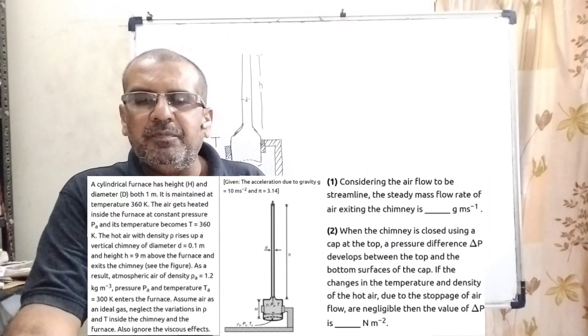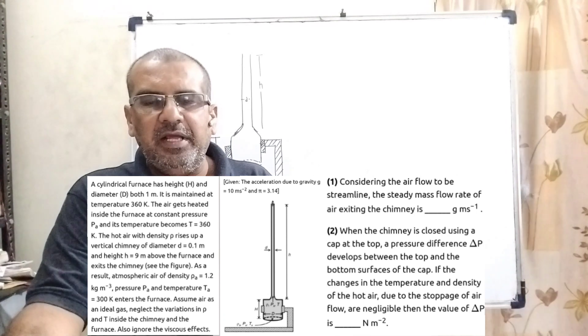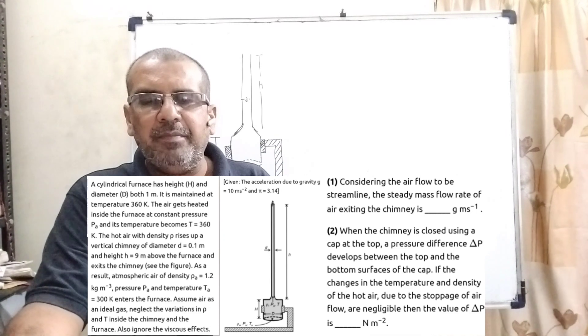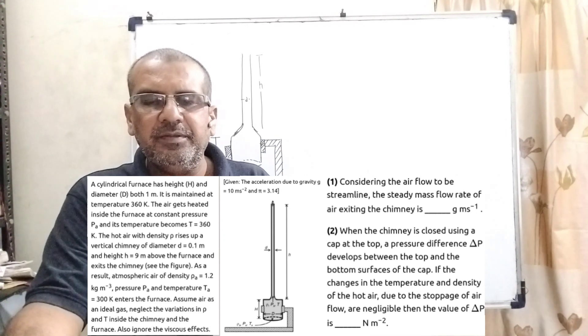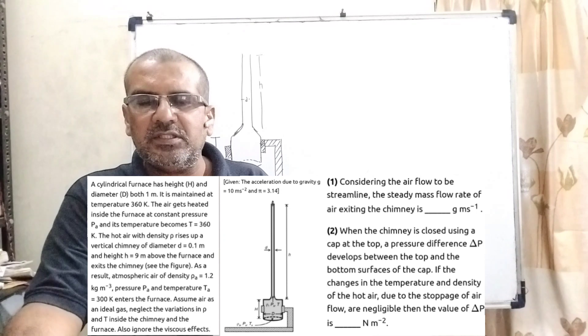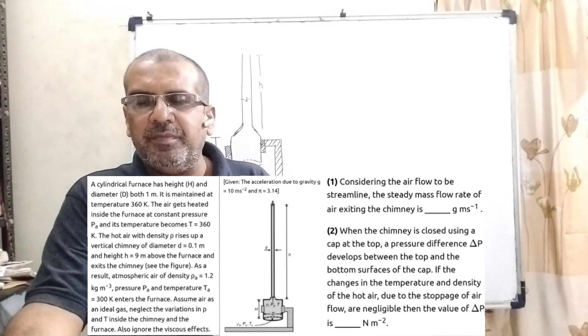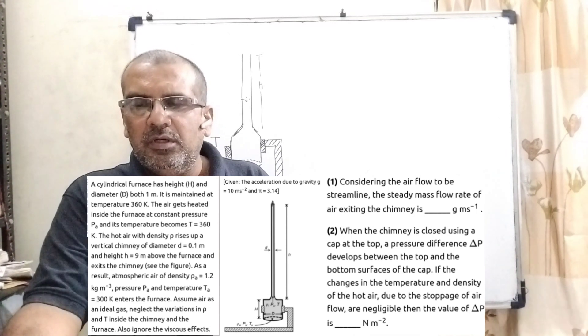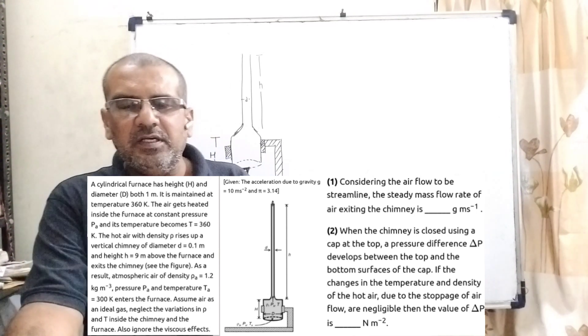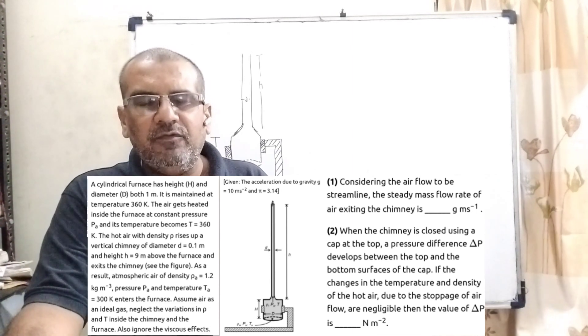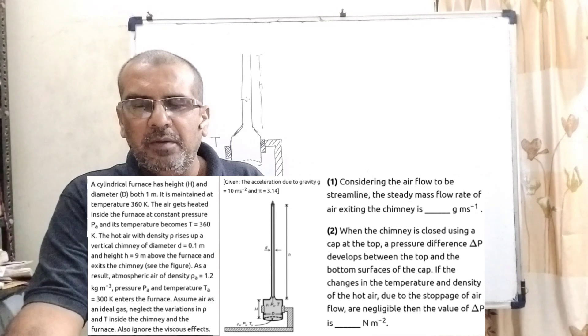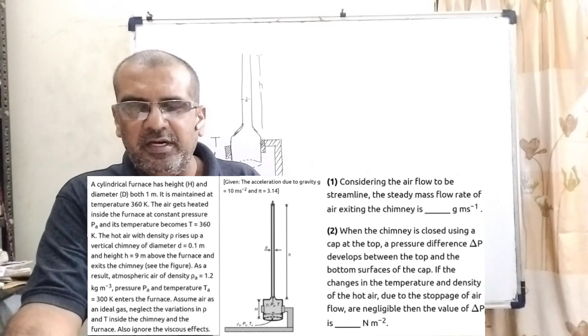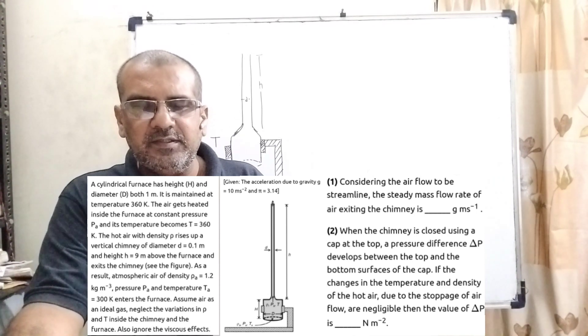Here is the question. A cylindrical furnace has height H and diameter D, both 1 meter. It is maintained at temperature 360 Kelvin. The air gets heated inside the furnace at constant pressure P alpha, and its temperature becomes T equal to 360 Kelvin. The hot air with density rho rises according to the figure. As a result, atmospheric air of density rho alpha equal to 1.2 kilogram per meter cubed, pressure P alpha, and temperature T alpha equal to 300 Kelvin enters the furnace. Assume air as an ideal gas.